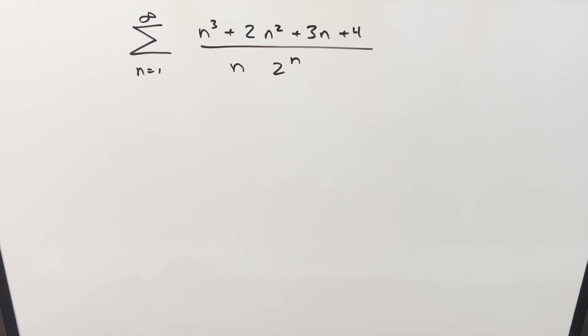Okay, we have here a pretty interesting problem. We've got the sum from n equals 1 to infinity of n cubed plus 2n squared plus 3n plus 4, over n times 2 to the n.